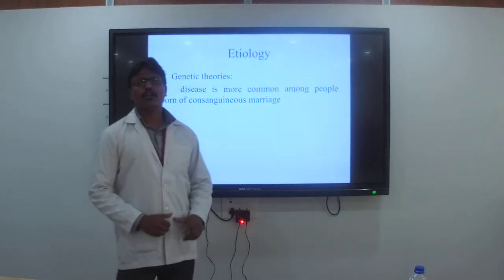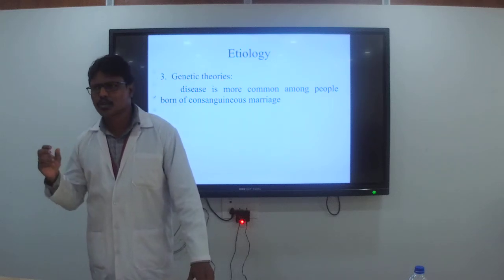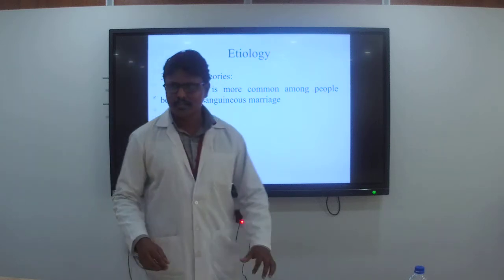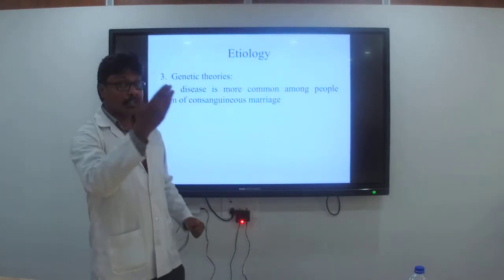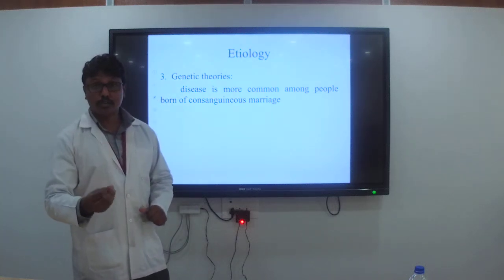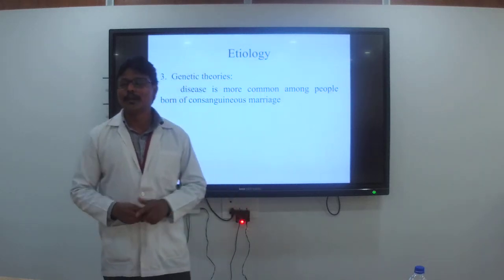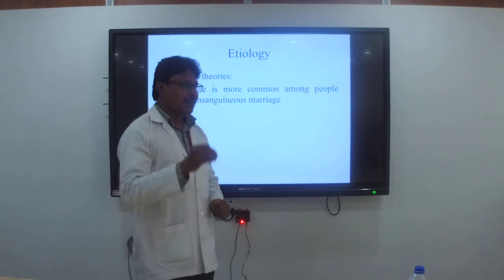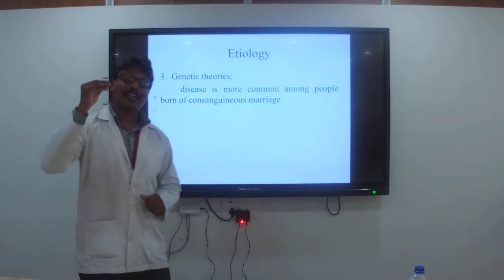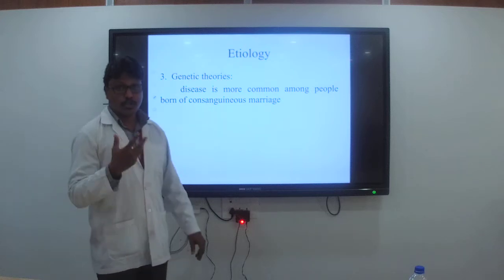The next etiological factor is genetic theories — hereditary, transferred from one generation to another. This is quite common in all psychiatric disorders. Another aspect of genetic theory is that children born from consanguineous marriage — marriage between blood relations — are at high risk for such psychiatric disorders including schizophrenia.